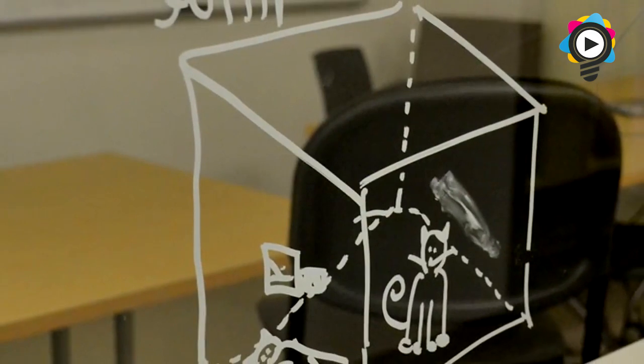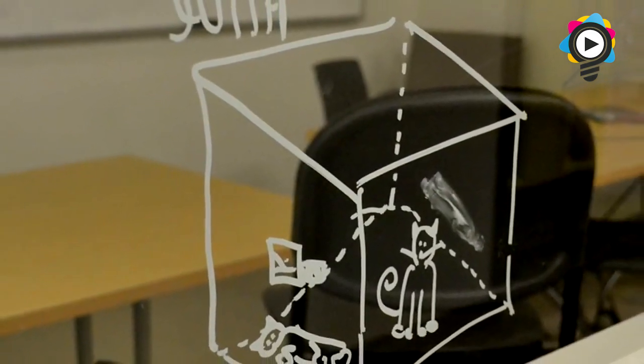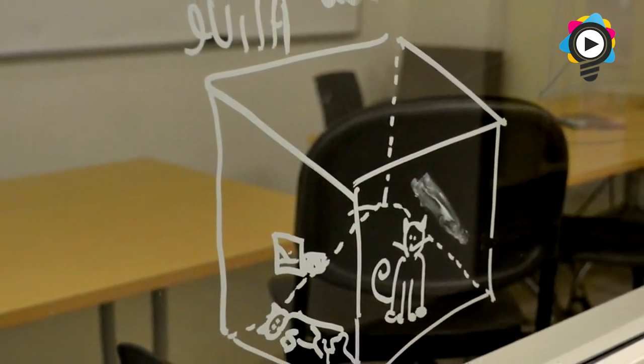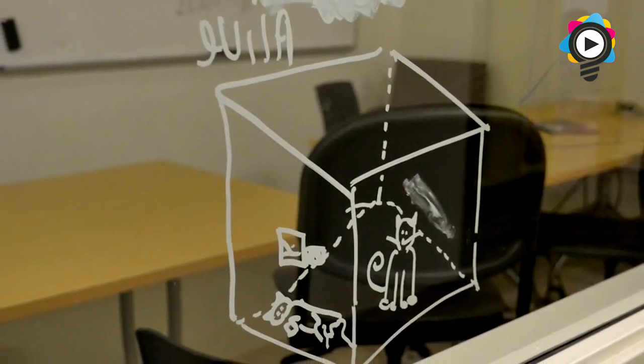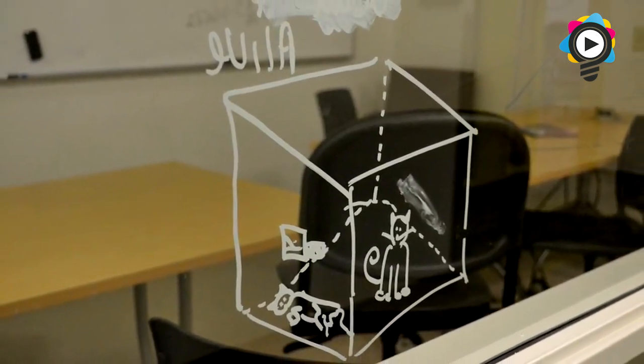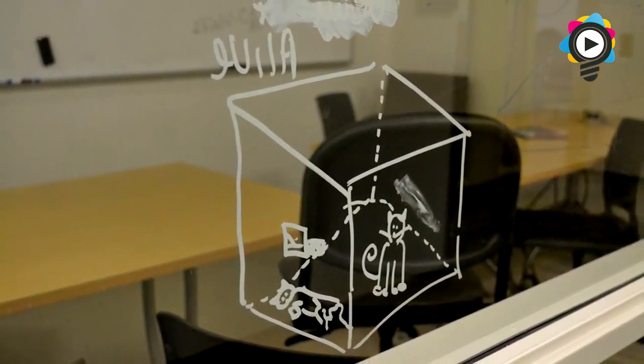Schrodinger's Cat is a famous thought experiment illustrating the seemingly paradoxical nature of quantum theory and how observation makes such a difference, almost forcing the universe to choose a particular path.